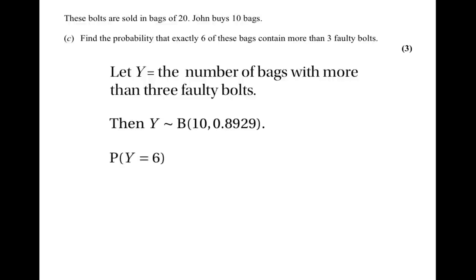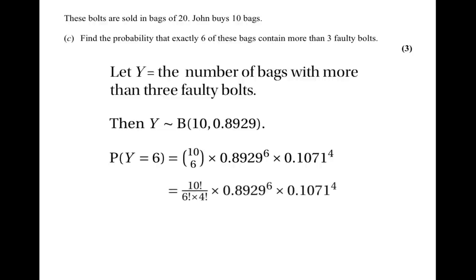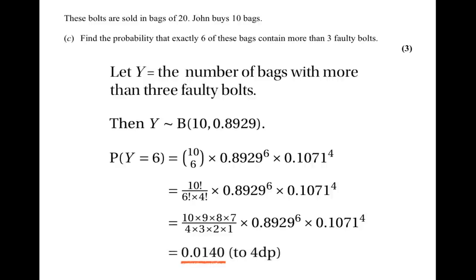We want P(Y = 6). The formula gives us 10 choose 6 times 0.8929 to the power of 6 times 0.1071 to the power of 4. Now 10 choose 6 equals 10 factorial over 6 factorial times 4 factorial, which is 10 times 9 times 8 times 7 over 4 times 3 times 2 times 1. Calculating this gives the answer 0.0140 to 4 decimal places.